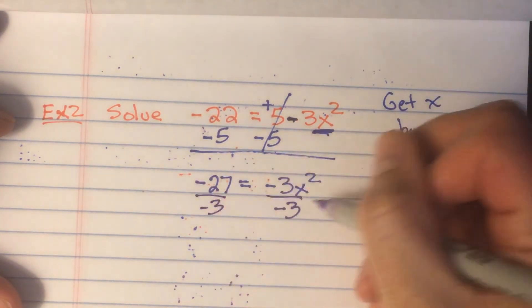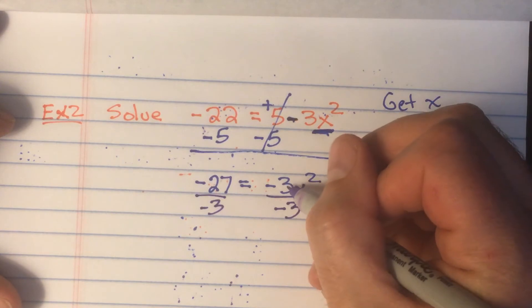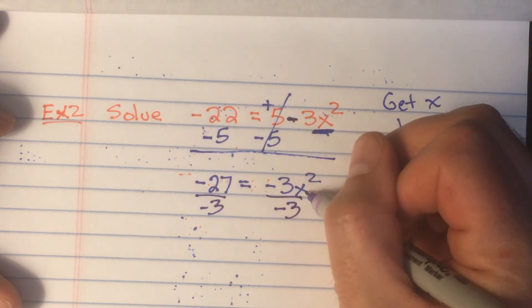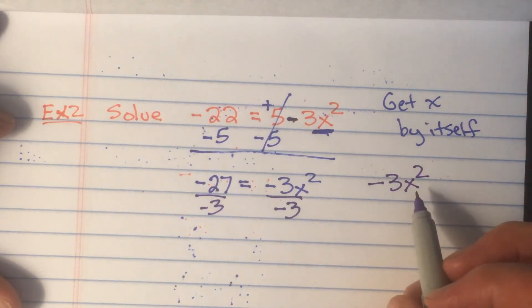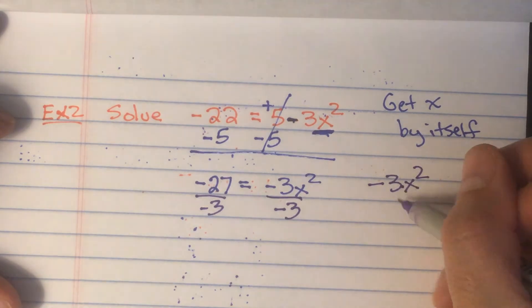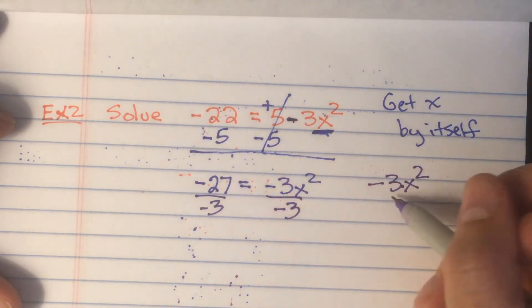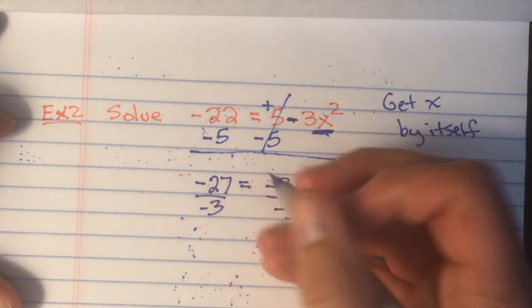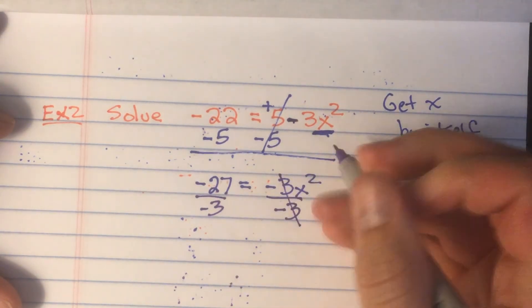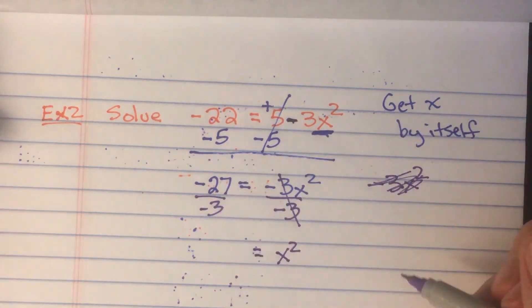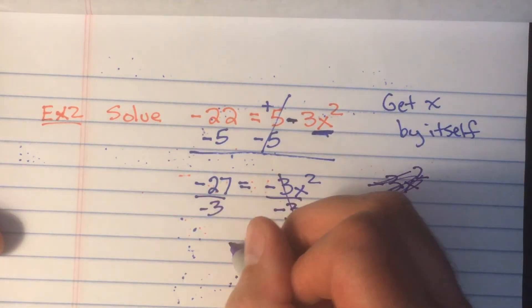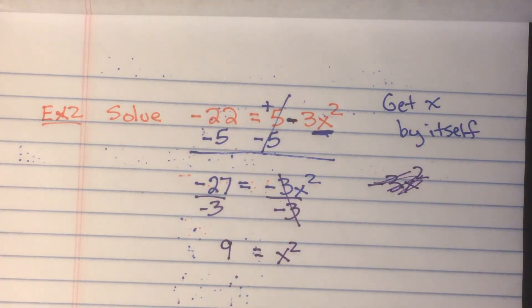Now remember, even though it's a negative 3, you might be tempted to add it. But how is that negative 3 connected to the x? If you read it, does negative 3x squared read negative 3 plus x squared or negative 3 times? When they're smushed together, it means times. So how do we get rid of multiplication? We divide. So we're going to divide by negative 3. That gives me 1 on this side. So just the x squared comes down. And on the left side, negative 27 divided by negative 3 is a positive 9. So on this side, we have a positive 9.